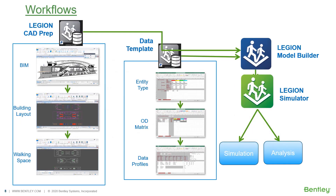The workflow of using Legion is quite simple. First is to prepare input data. There are two major categories of inputs. One is about the area, space, or facility where people are moving, in the form of CAD drawings. The other is about the characteristics of the people themselves, such as their walk speeds and origins and destinations, among others. Legion Model Builder will take the input data and build a model that depicts how people move within the study area. Legion Simulator would then simulate movements of the people and produce analysis outputs.